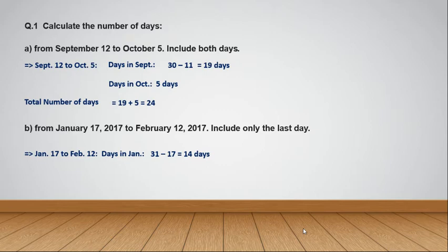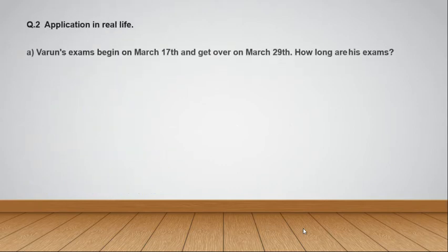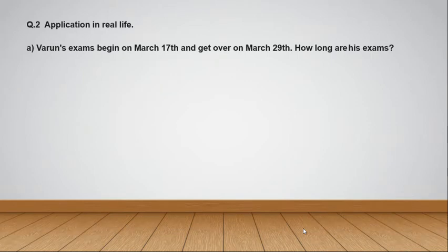Now let's go for the next month. In February we need to take the first 12 days because the ending day is the 12th of February. From 1st February to 12th February there are 12 days. The total number of days is 14 plus 12, which equals 26. So there are 26 days in total.